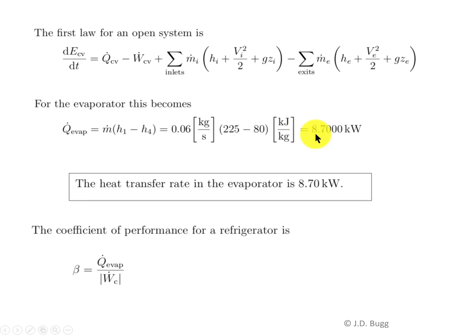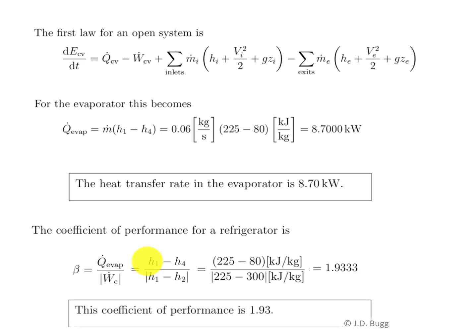Next, we move on to the coefficient of performance. The coefficient of performance is the q dot of the evaporator that we just found divided by the compressor power. The compressor power we can express as h1 minus h2. The evaporator of course was h1 minus h4. So because we know all of these enthalpies, we can calculate the coefficient of performance. And that works out to 1.933. So we conclude the coefficient of performance is 1.933.